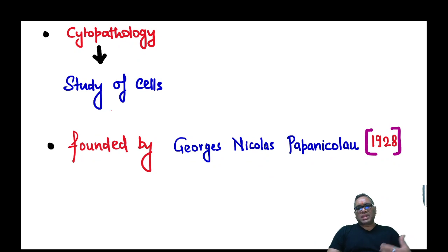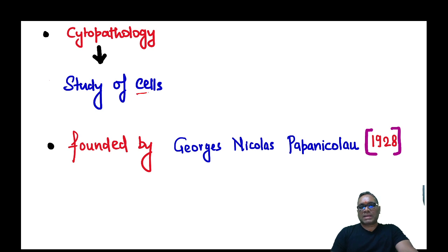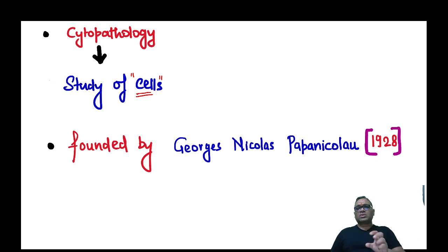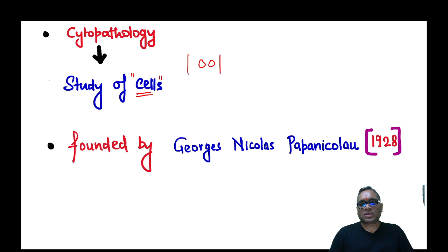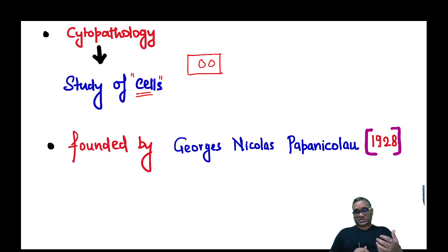So what is the meaning of cytopathology? It's a branch of pathology where you are going to study only about cells. You are not seeing their relation with the blood vessel, the surrounding tissue, or the capsule. You are just seeing cells on the slide. That is why it is called as cytopathology.